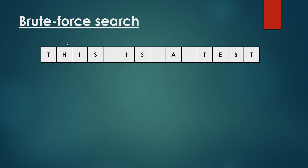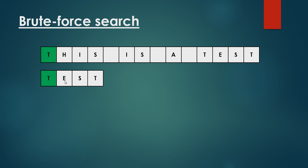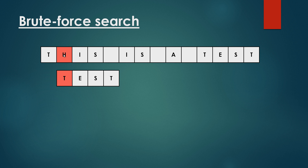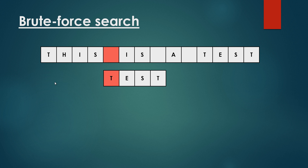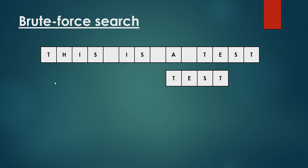Let's take a look at a concrete example. We have the text 'This is a test' and we have the pattern — we are looking for the word 'test' in the given text. We keep comparing the first character of the pattern with the corresponding character in the text. It is a match, so we consider the next character. It is a mismatch, so we shift the pattern one step to the right. Again a mismatch, so we keep going right — mismatch, go to the right, mismatch, and so on.